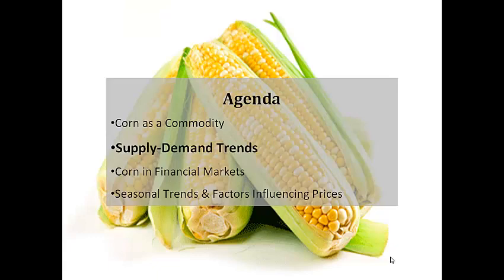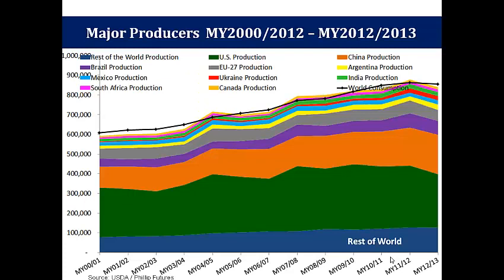Moving on to supply-demand trends. The marketing year for corn is September each year to August the next year, and we are currently in marketing year 2012-13. The top 5 producers of corn are the United States, China, Brazil, the EU 27 countries and Argentina, denoted by the area in yellow. Together, these countries account for about 75% of global corn production. Global production has been volatile, and the shape closely resembles US production, hence global production is heavily dependent on US production.